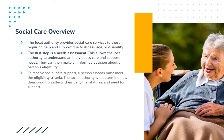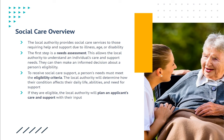The local authority provides social care services to those requiring help and support due to illness, age, or disability. The first step is a needs assessment. This allows the local authority to understand an individual's care and support needs, so they can make an informed decision about a person's eligibility. To receive social care support, a person's needs must meet the eligibility criteria. The local authority will determine how their condition affects their daily life, abilities, and need for support. If they are eligible, the local authority will plan an applicant's care and support with their input.